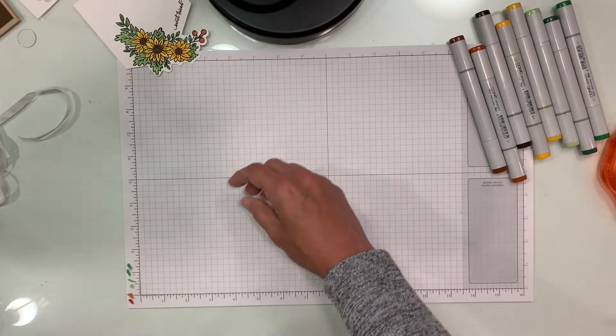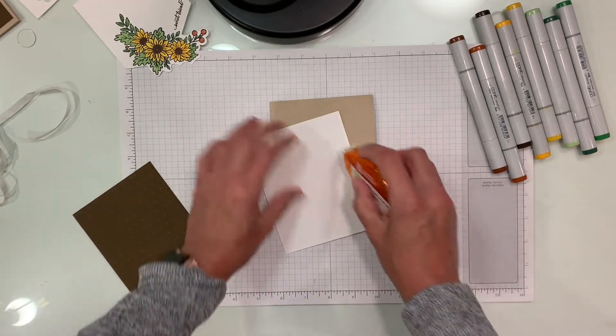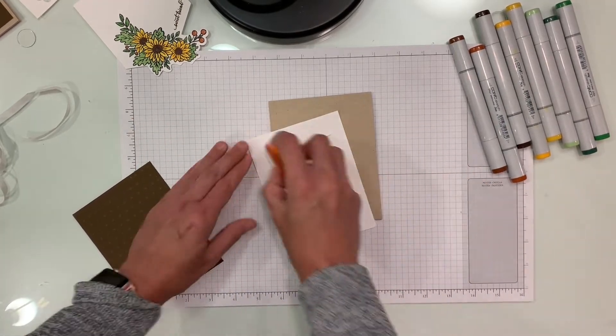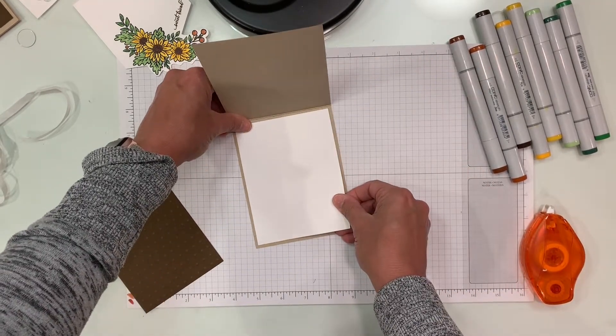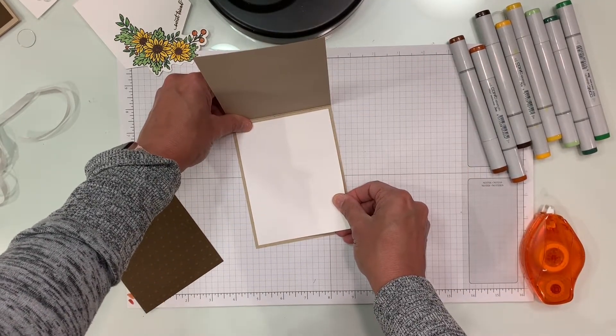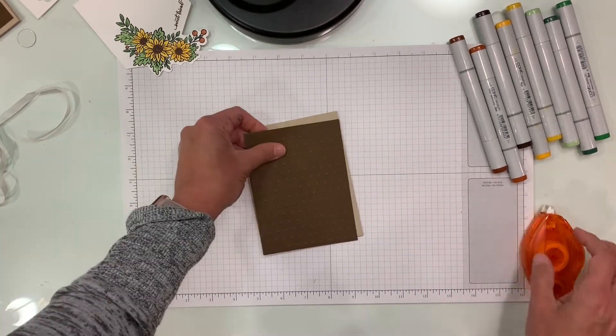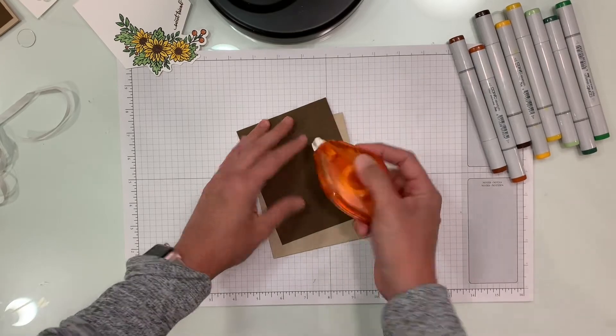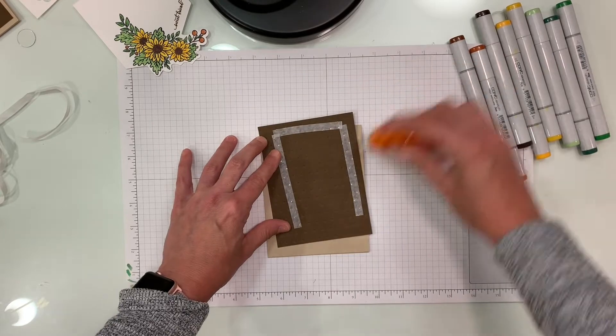All righty, so we have the card base and we have a panel for the inside. So we're going to go ahead and put that in. There we go. And then what we're going to do is we're going to tape this embossed layer right on the front of the card.